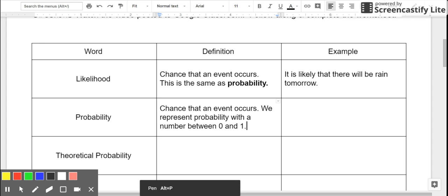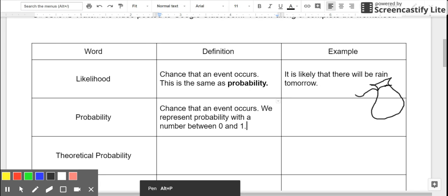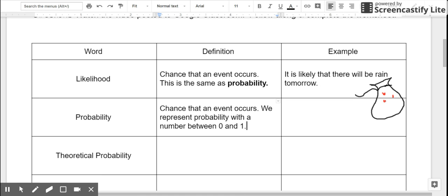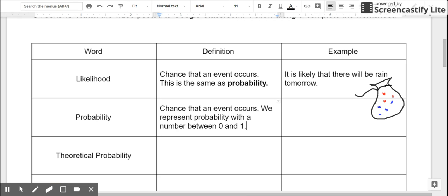So let's use an example of drawing a marble out of a bag. If I imagine this is my bag, I'm going to use this example for likelihood and probability. Let's imagine our bag has 1, 2, 3 red marbles and 1, 2, 3, 4 blue marbles.